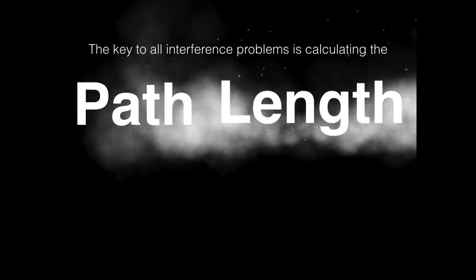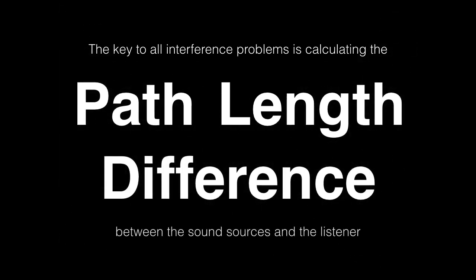The key to all interference problems — the superposition of two waves of the same frequency — is that we need to calculate the path length difference between each of the two waves. In other words, how far does one wave have to travel to reach the listener versus how far the other wave has to travel? That path length difference determines how well aligned the waves are relative to one another. From here on, we're going to be talking specifically about the interference of sound waves, starting with waves in one dimension propagating along the x-axis.